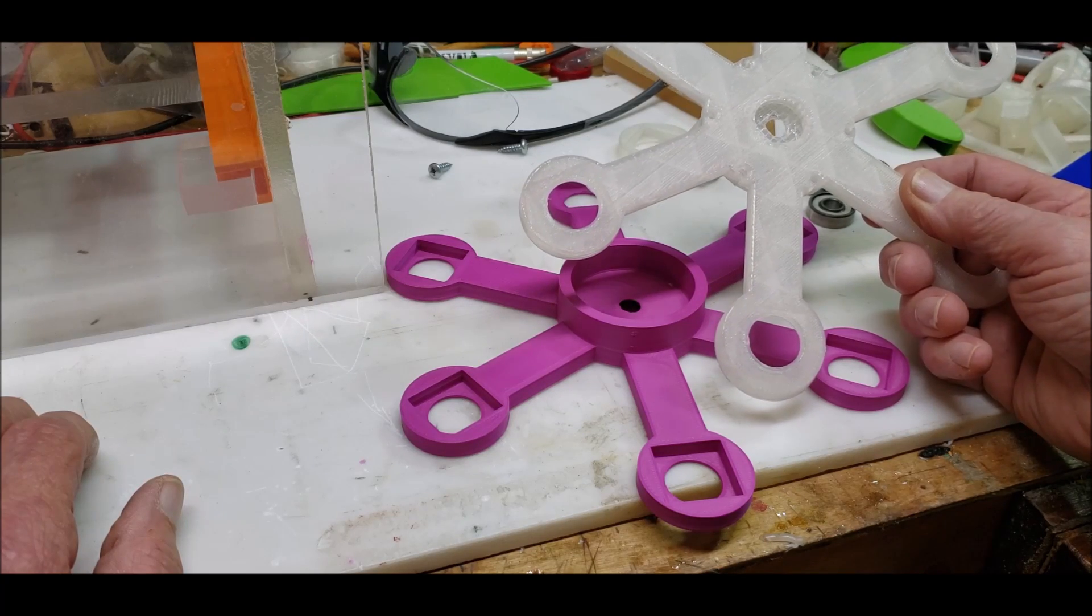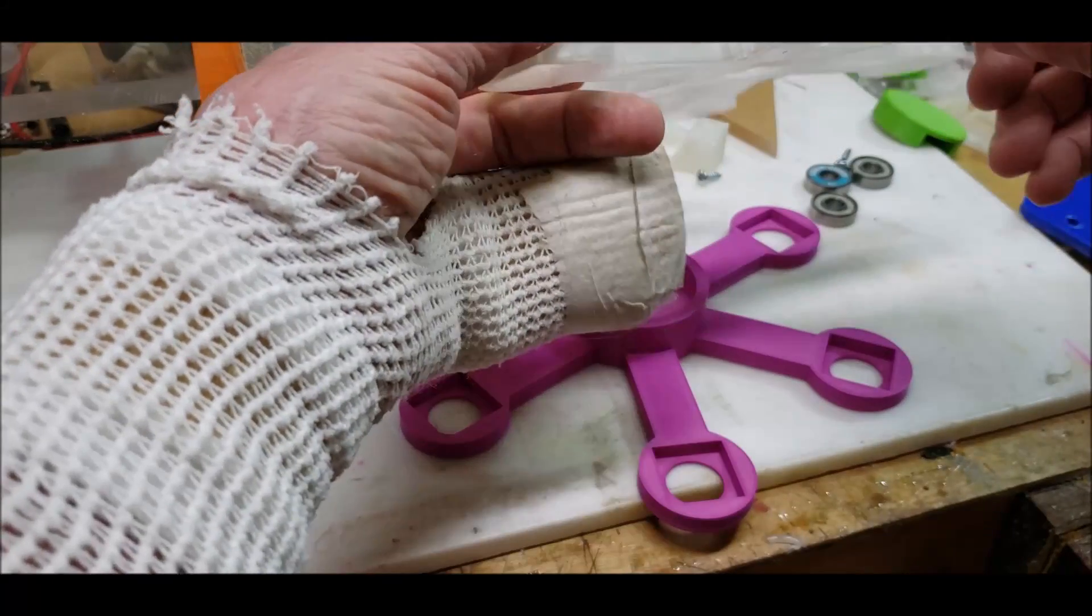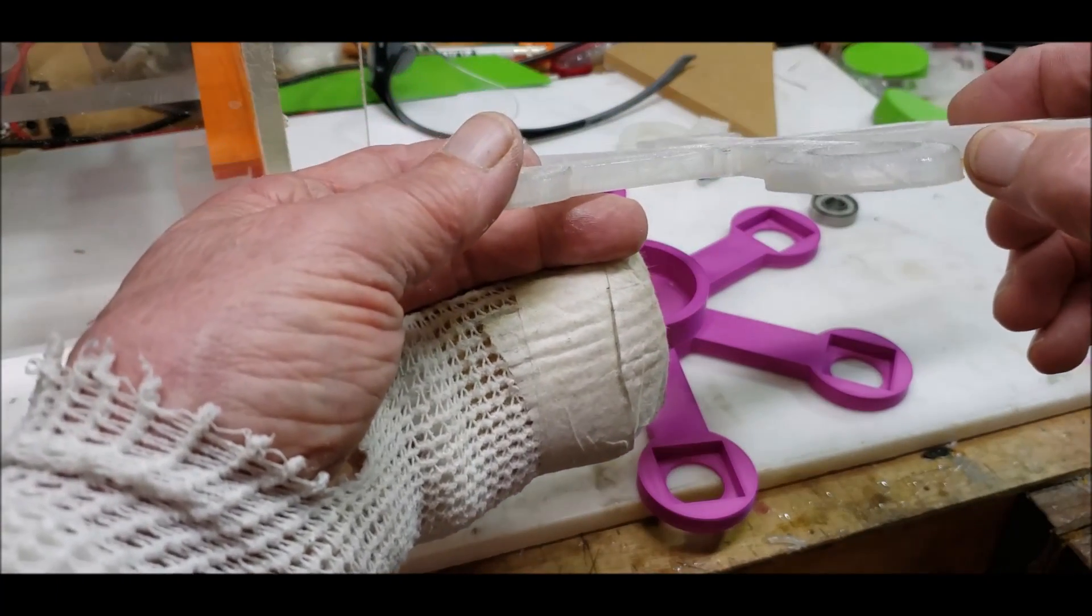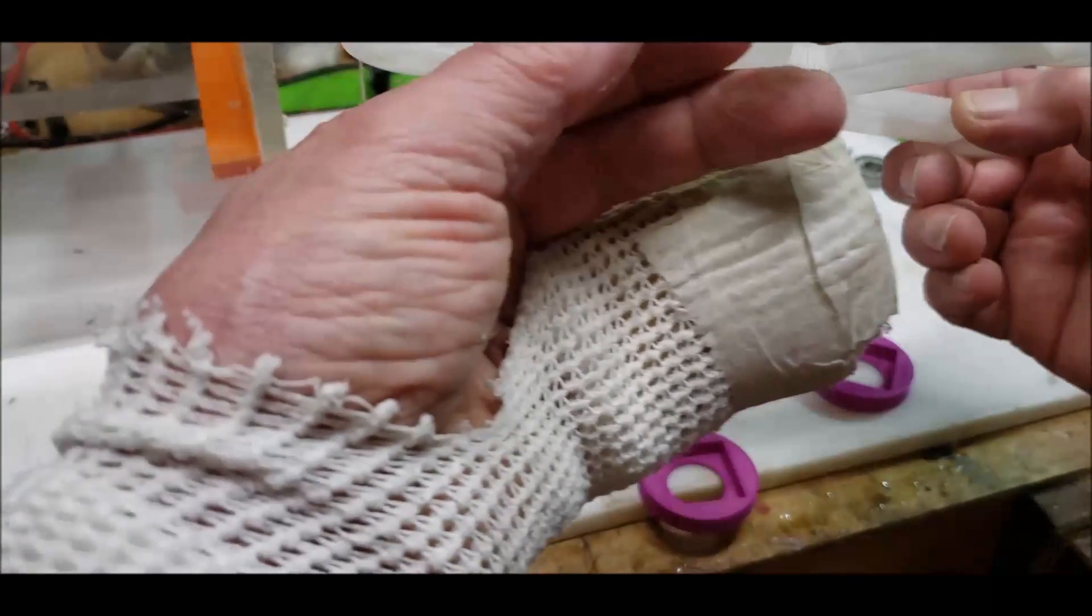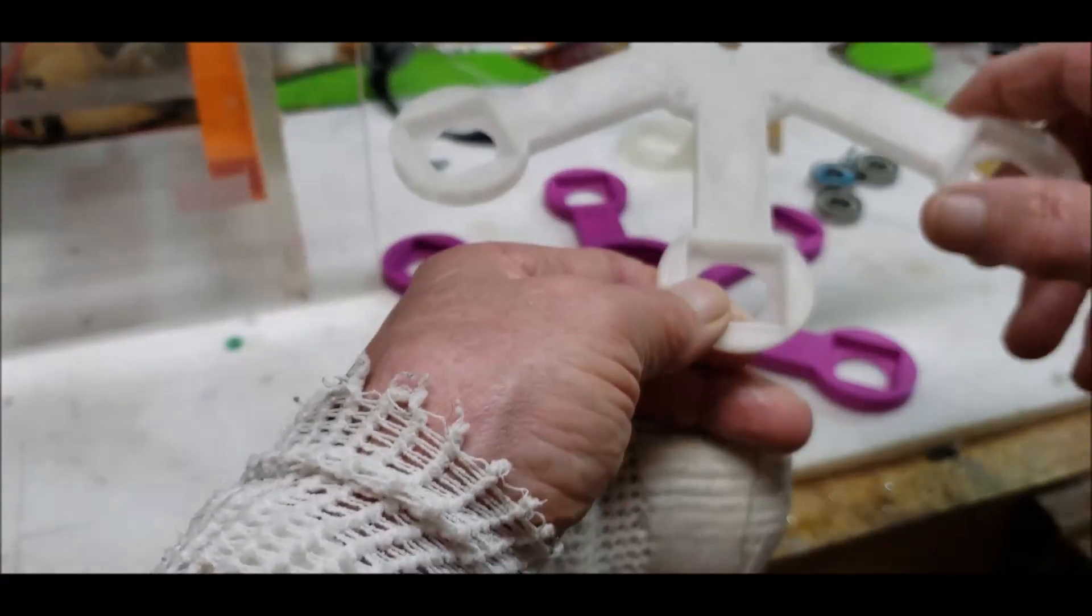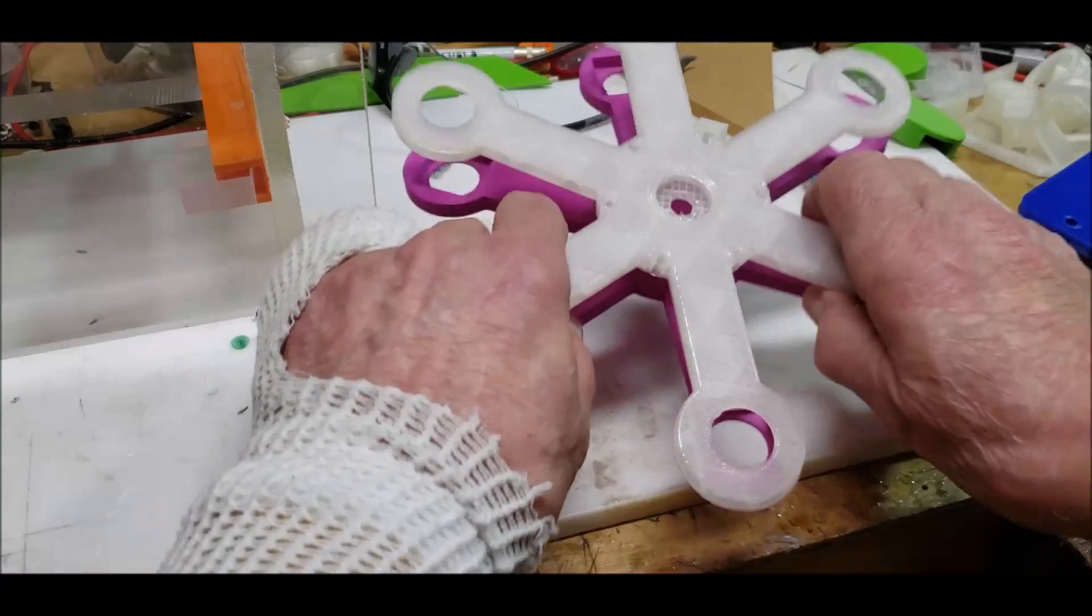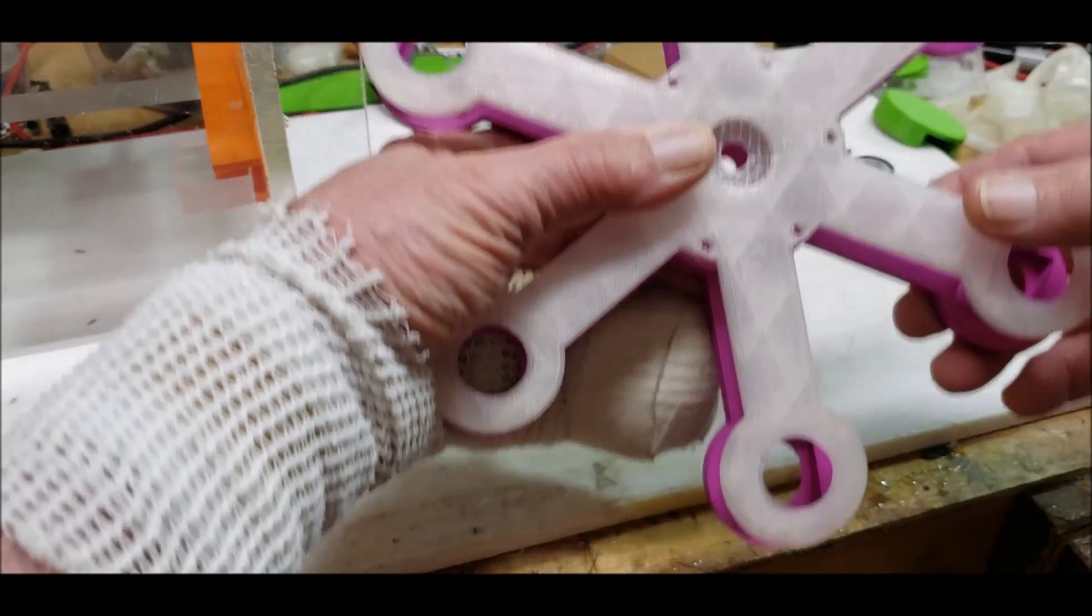For some reason the clear filament I have was just not behaving. You can see here - I don't know if you can see this - one leg here, actually three of them warped, so it doesn't... I mean it's okay, I could probably get it to work but I don't like the fact that it's warped.